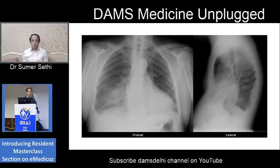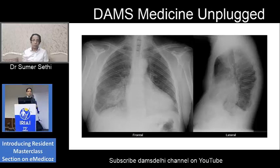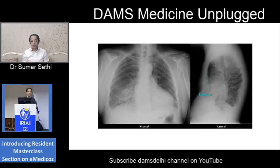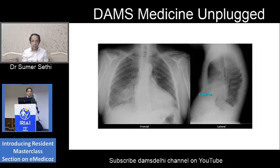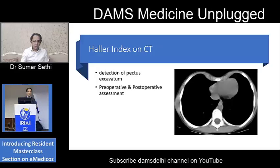If this is a short case, the examiner would ask you what you want to see to confirm your suspicion. The easiest thing to do is a lateral view. Although most modern residents would jump to a CT scan, you can see on the lateral view how the sternum is depressed — this is confirmatory. The PA view gives suspicion of a chest wall deformity, but the lateral view confirms it. CT today also plays a role for pre- and post-operative assessment of severity.